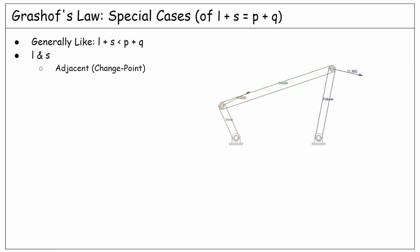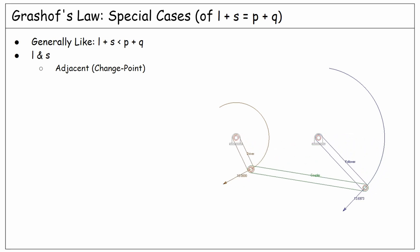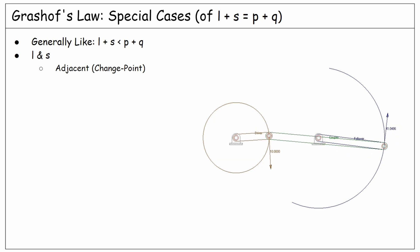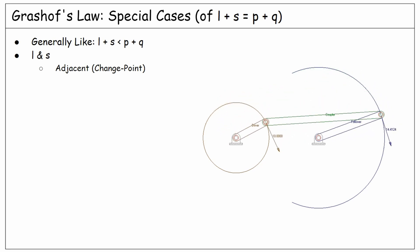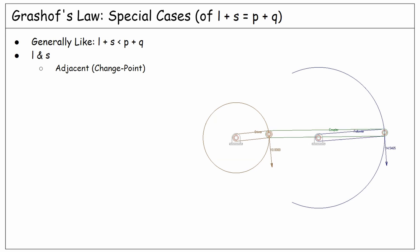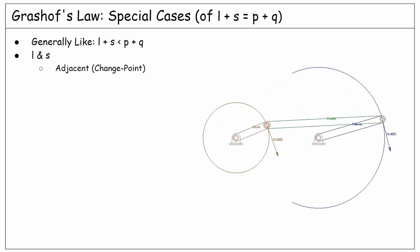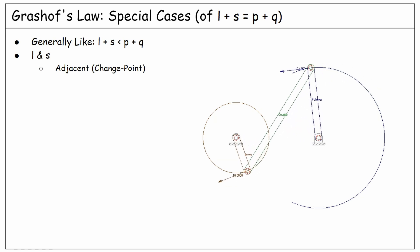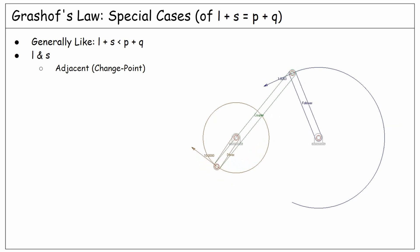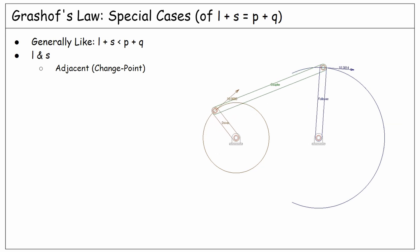Let's watch again and look closer. As you see, this time the follower changed its direction of rotation. So the system might sometimes choose to change the direction and sometimes might not. It's not always random and might depend on some factors such as the gravity or the moment of inertia of the links.